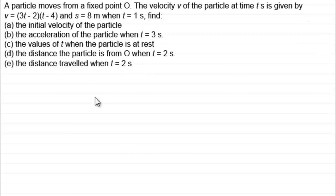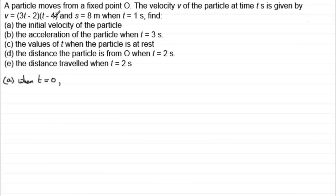Let's start with Part A — we've got to find the initial velocity of the particle. The initial velocity is when t is 0, so we substitute t equals 0 into the equation for v. The first bracket becomes minus 2, and the second bracket becomes minus 4. So v equals minus 2 times minus 4, which is equal to 8 metres per second.